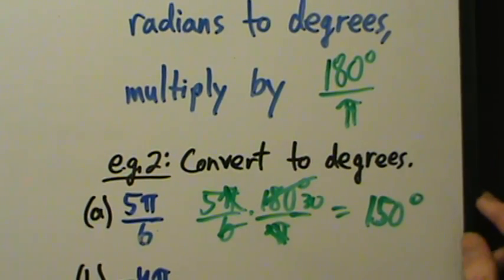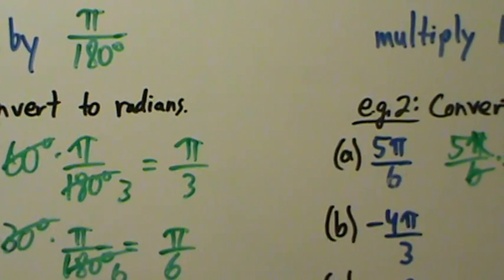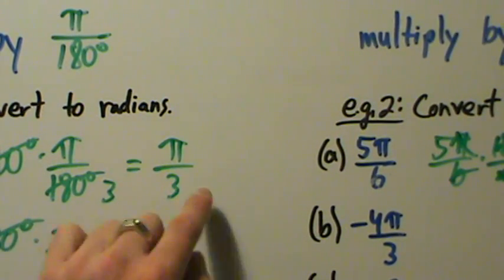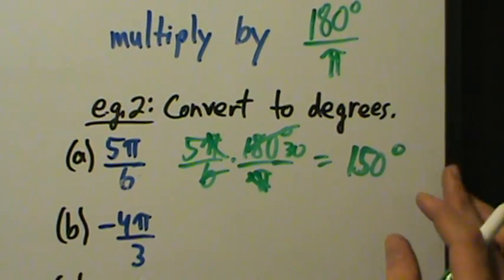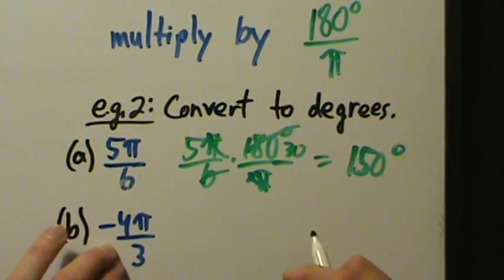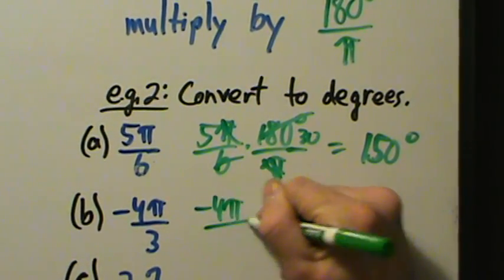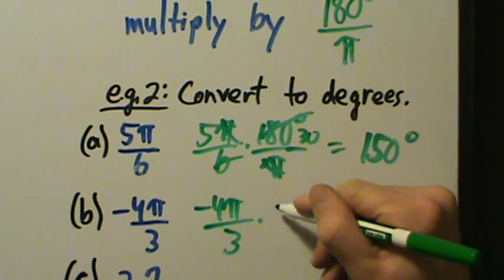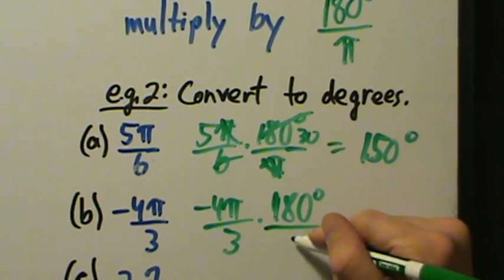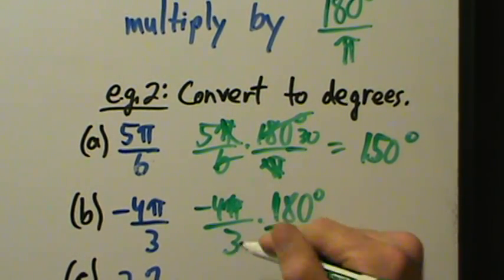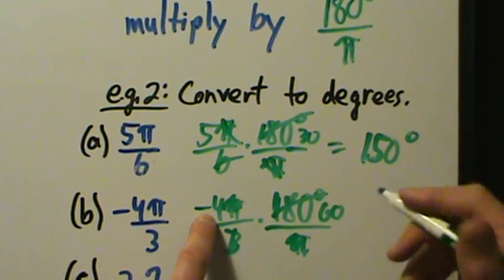Remember: for degrees you have to have that degree symbol, but for radians you don't really need a unit — you can say rad, radian, or nothing if it's clear from context. So 150 degrees needs the degree symbol. For negative 4 pi over 3: multiply by 180 degrees over pi, the pi's cancel, 3 goes into 180 sixty times, and 60 times negative 4 is negative 240 degrees.